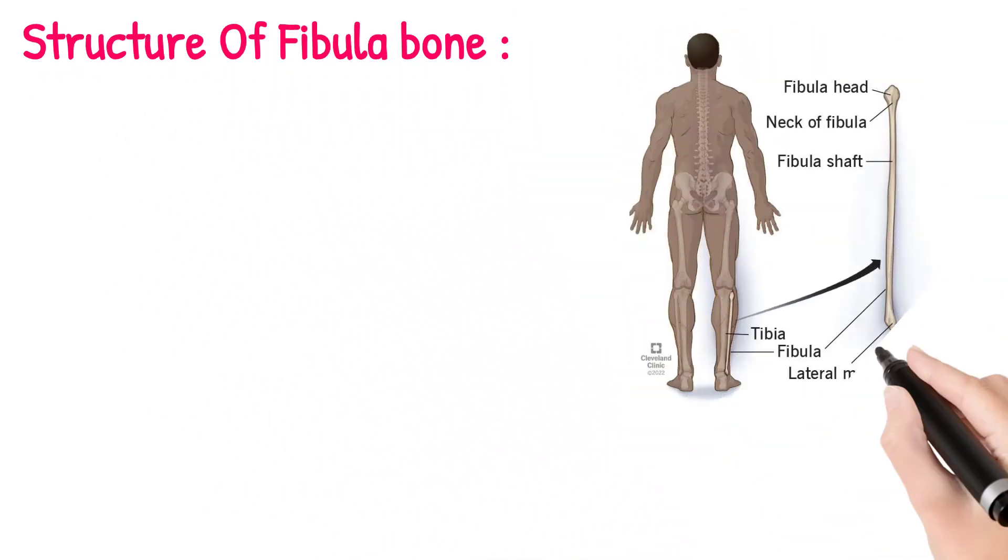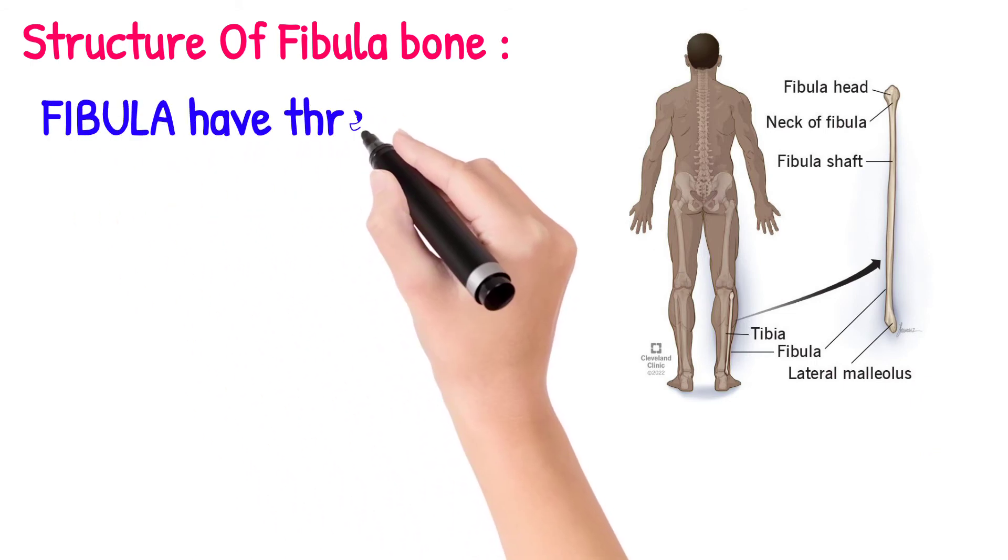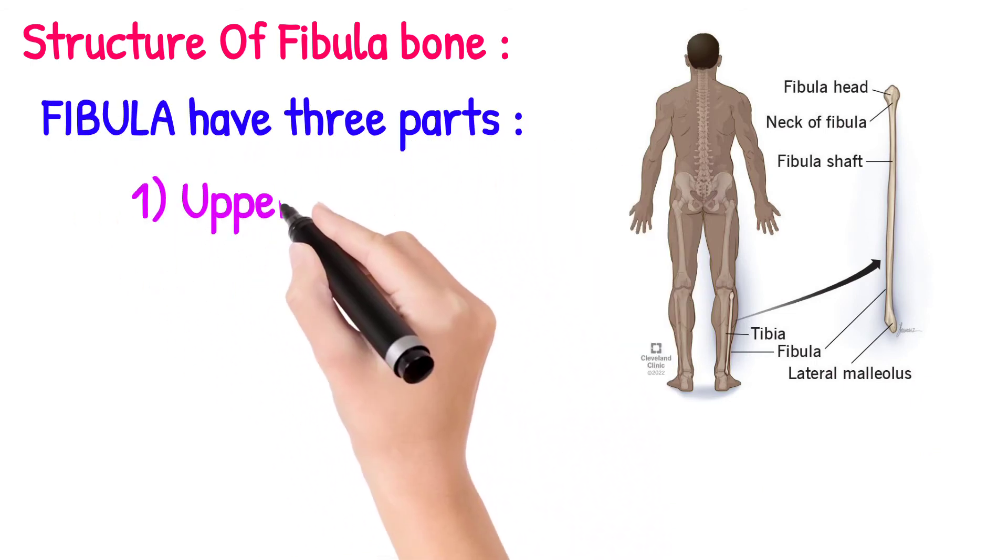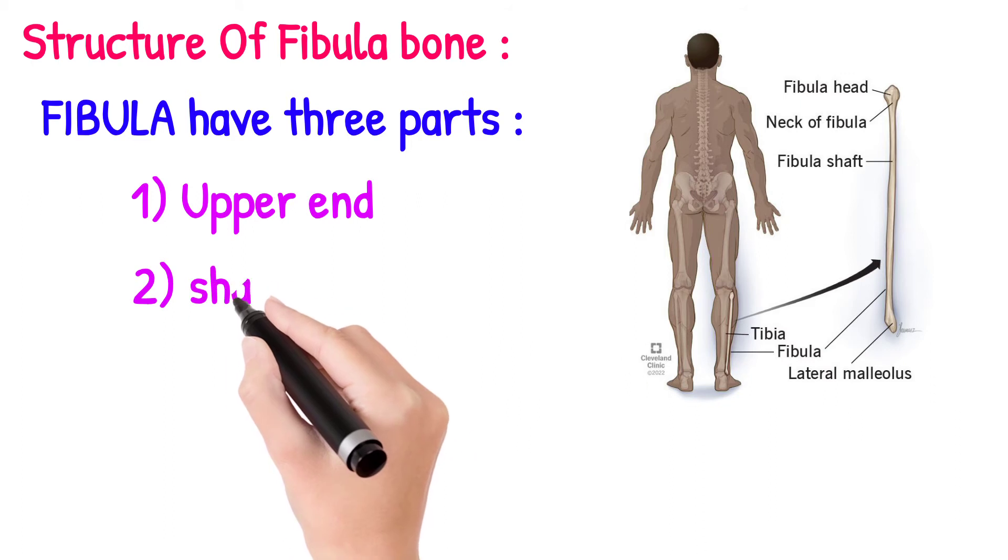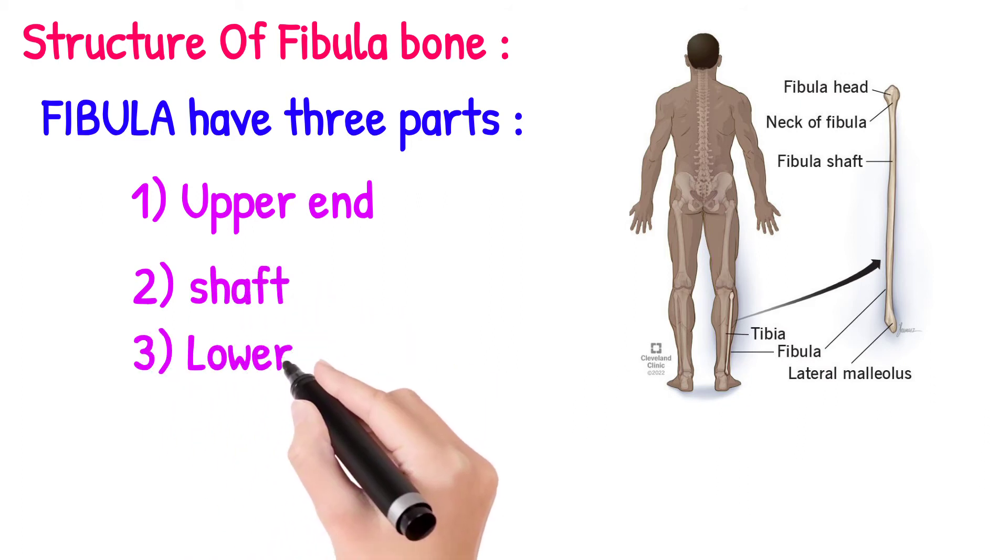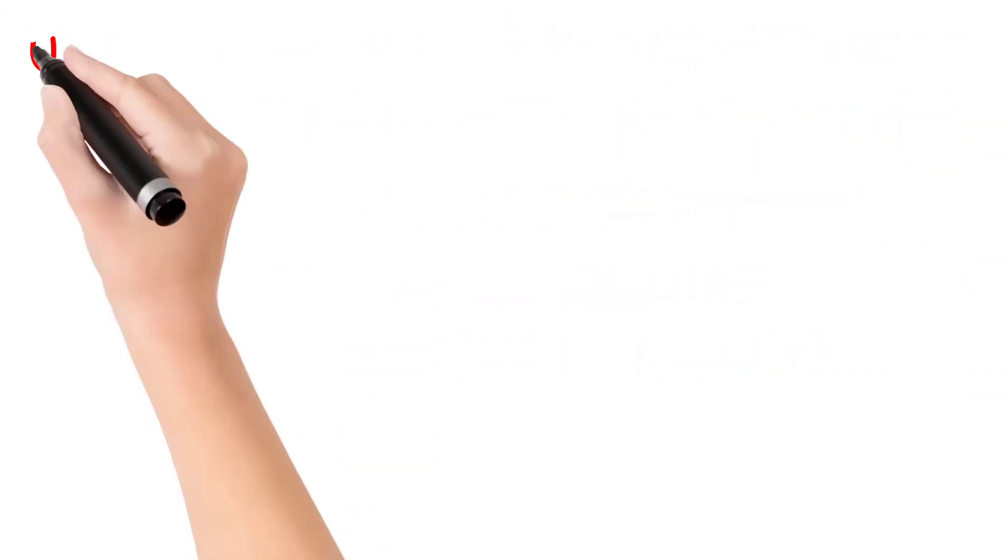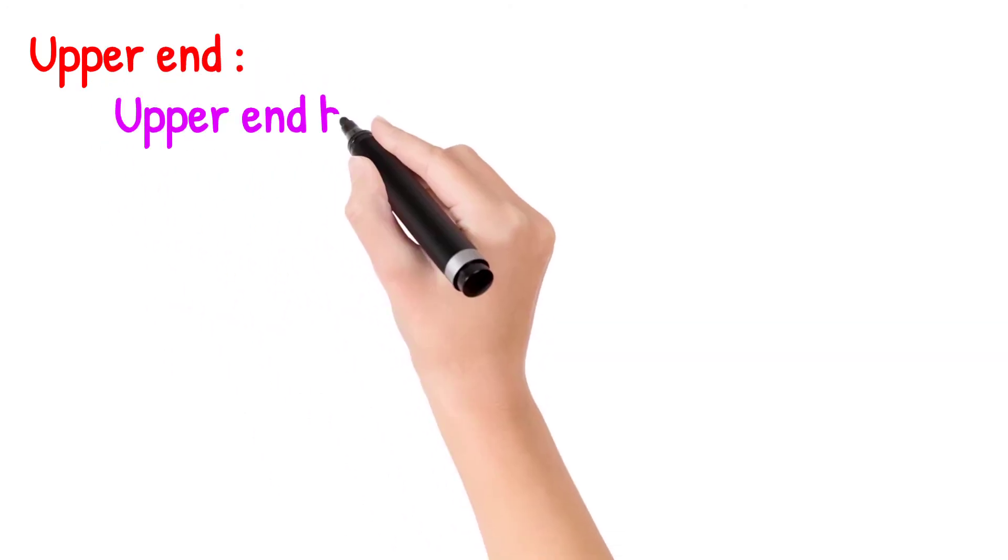Now we come to the structure of fibula bone. As you see in this picture, the fibula has three parts: upper end, shaft, and lower end. First we'll come toward the upper end.